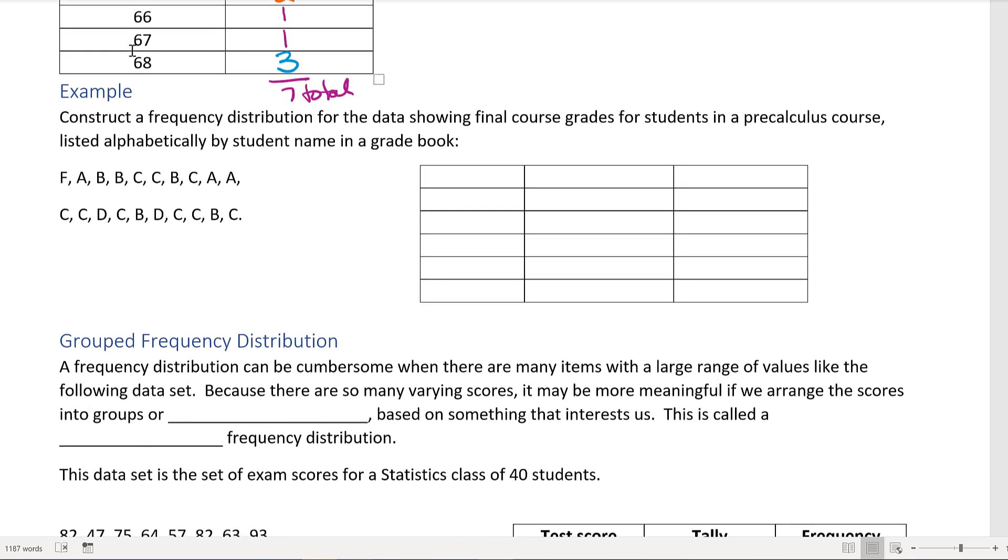Another example: We can construct a frequency distribution for the data showing final course grades for students in a precalc course, listed alphabetically by student name in a grade book. They're not in order from highest to lowest, they're by someone's name. These are fake grades, so don't assume I'm pulling grades here.